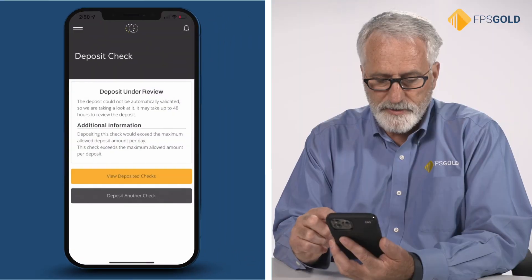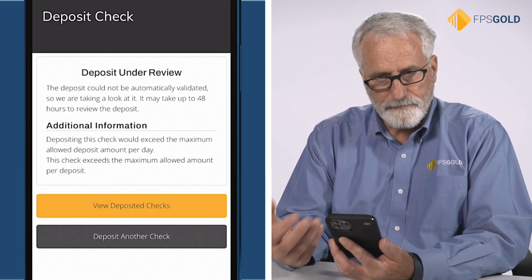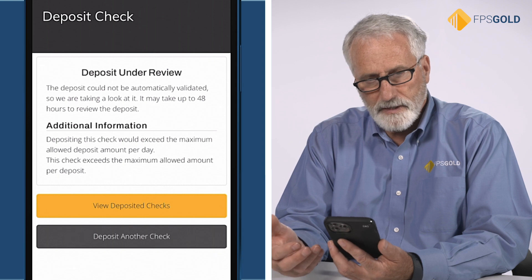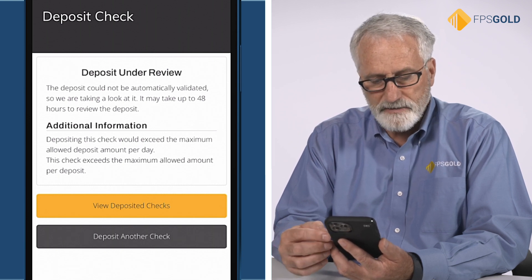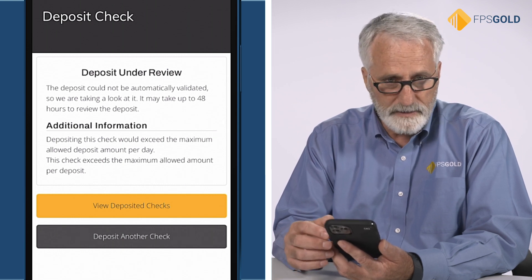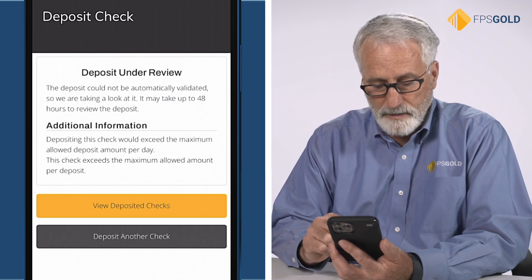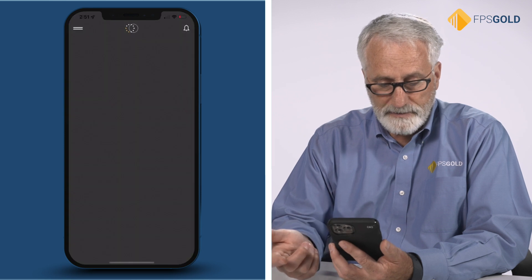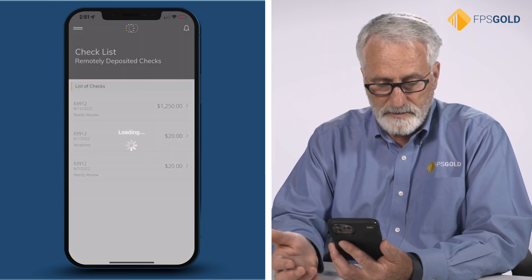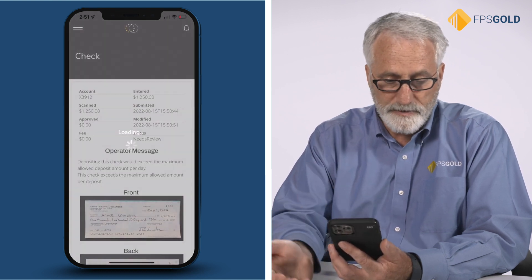Now I'm going to transmit those two images. As it transmits, we confirm that the image is good and then we get various messages back. If for example I've gone over my limit, it might be a check that needs to be reviewed. In this particular case it's saying that the check is under review. Some institutions want to validate more closely each individual check, so the user might get a message like this. I can go back and view my list of deposited checks and take a look at the images, or I can just continue on with another transaction.